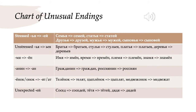On slide 13 of the PowerPoint, we have another chart where I've laid out some of the unusual endings, so let's go over it quickly. If you have a stressed мягкий знак + я in the nominative, either singular or plural, you will get stressed -ей in the genitive plural: семья → семей, статья → статей, друзья → друзей, мужья → мужей, сыновья → сыновей. If you have unstressed мягкий знак + я in the nominative plural, you will get unstressed -ев in the genitive plural: братья → братьев, стулья → стульев, платья → платьев, деревья → деревьев.